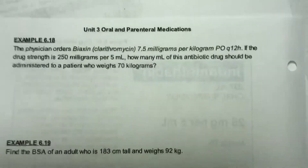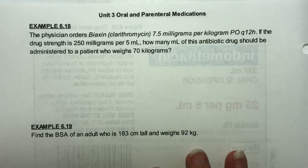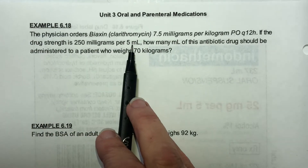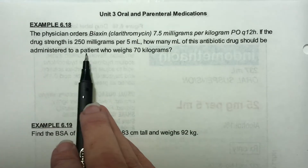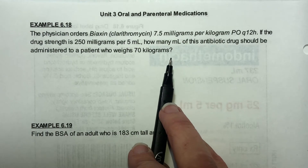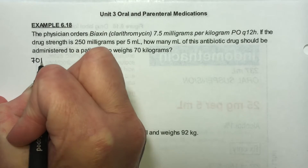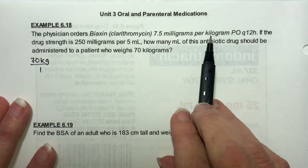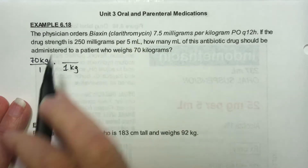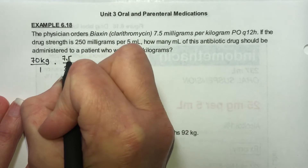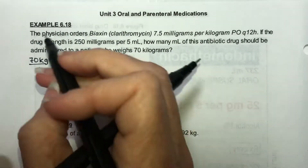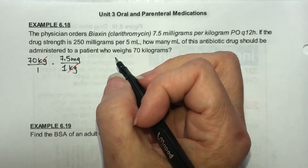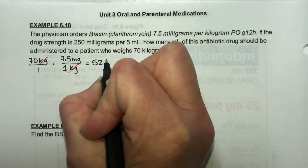Number 18: the physician orders 7.5 milligrams per kilogram. If the drug strength is 250 milligrams per five milliliters, how many milliliters should be administered to a patient who weighs 70 kilograms? Starting with 70 kilograms, the order is 7.5 milligrams per kilogram — placing kilograms on the bottom so it cancels. Multiplying 70 times 7.5 gives 525 milligrams.